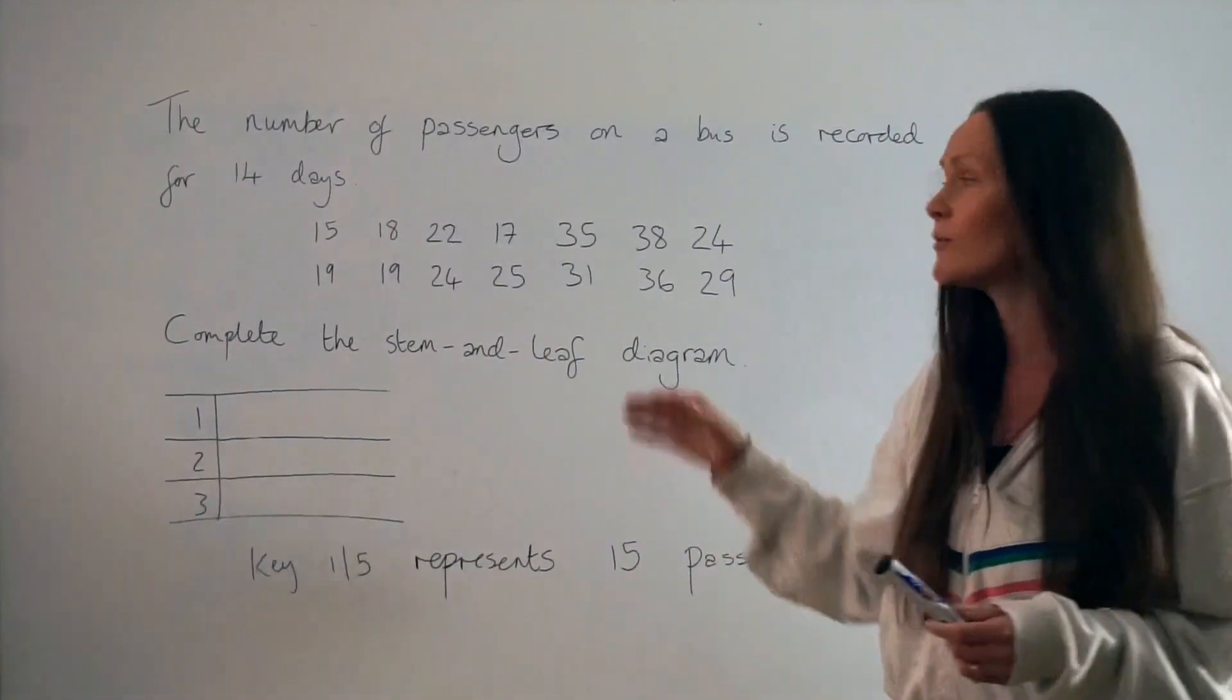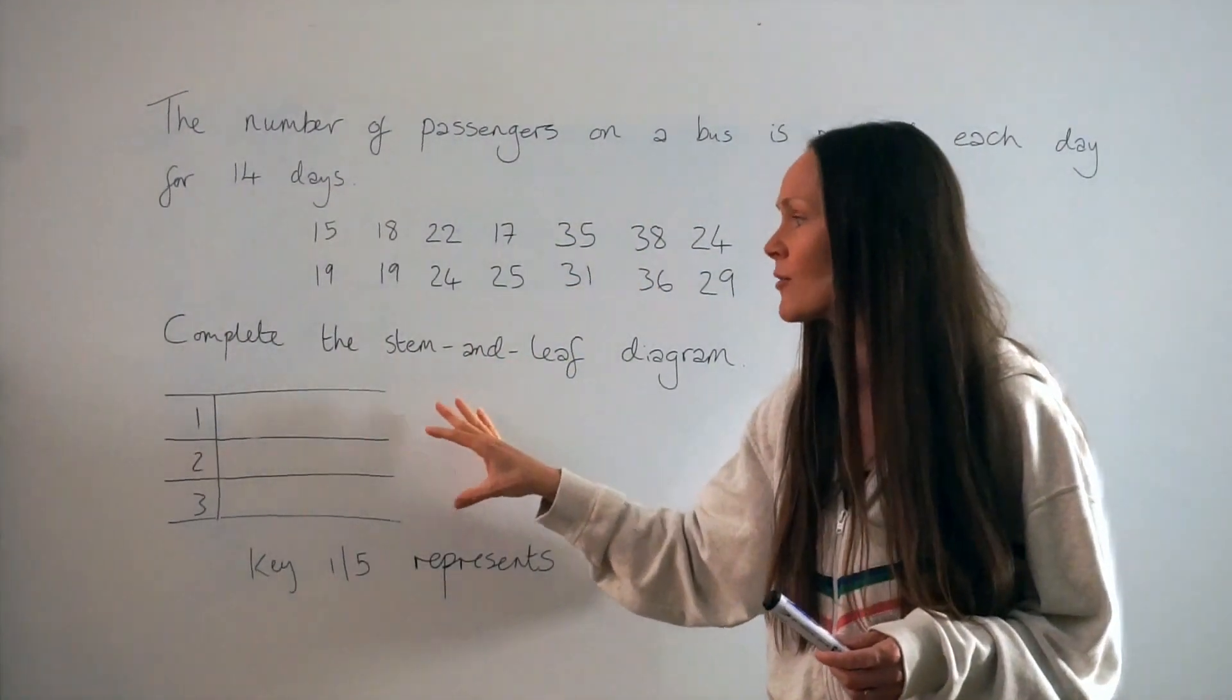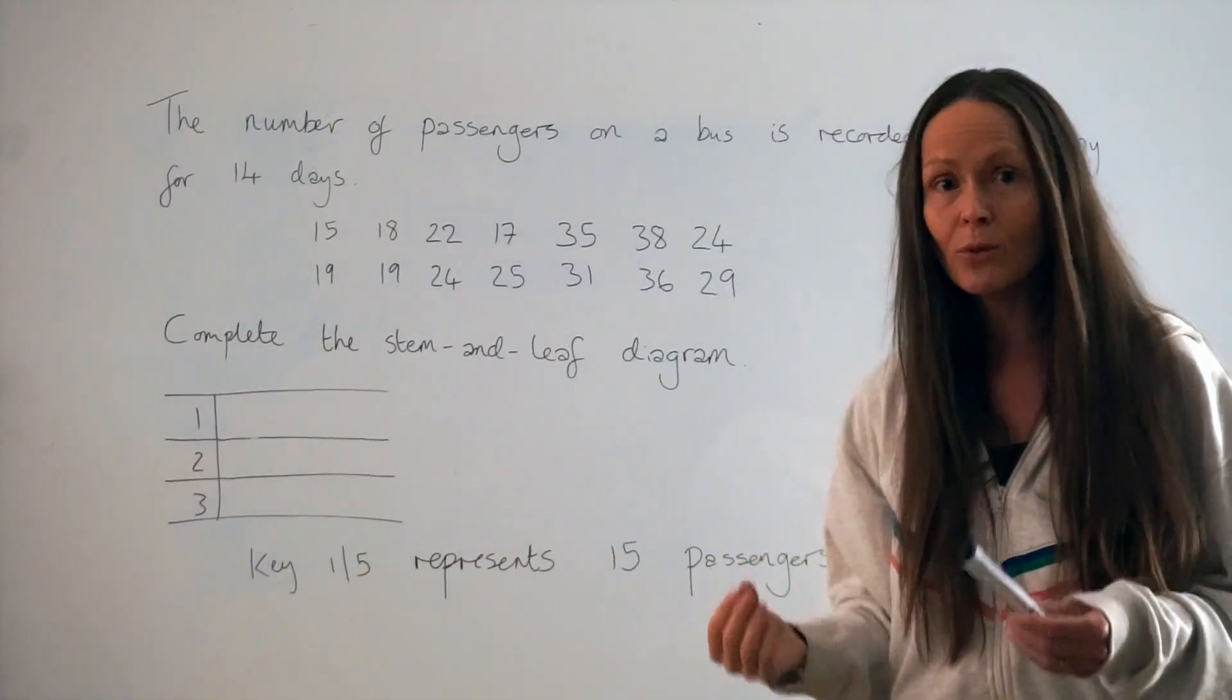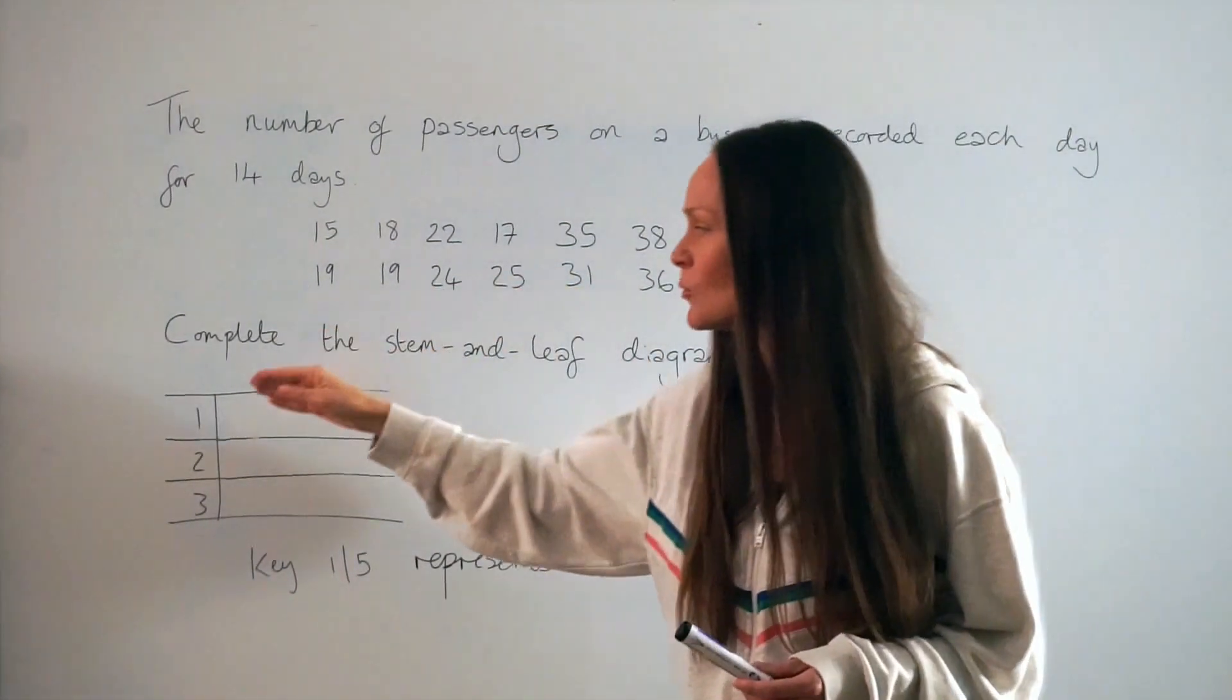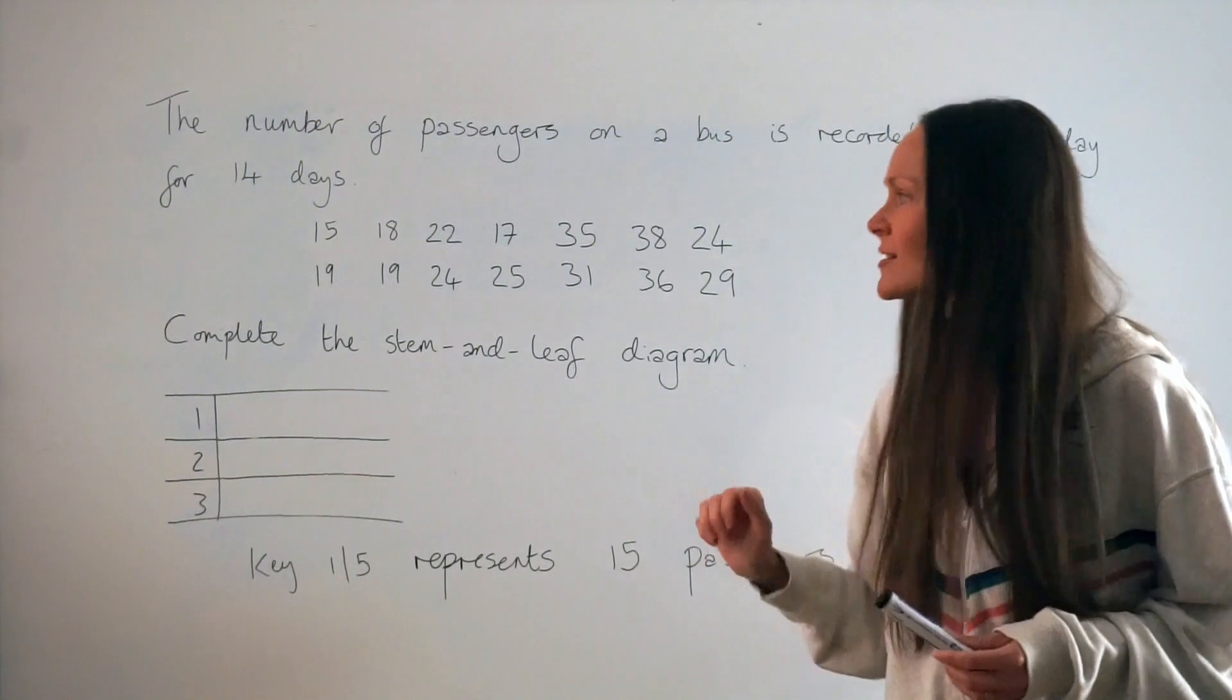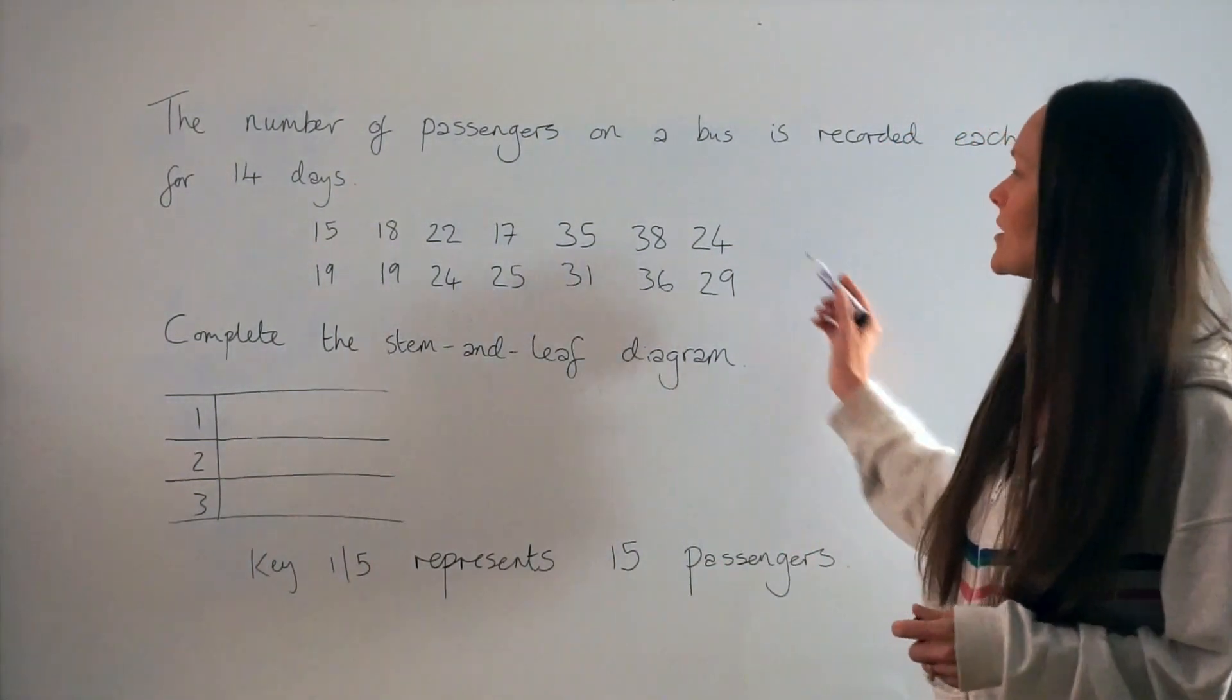When you write down the numbers in your stem and leaf diagram, make sure you write them in order, starting with the smallest and going to the largest. So let's look at these numbers given here.